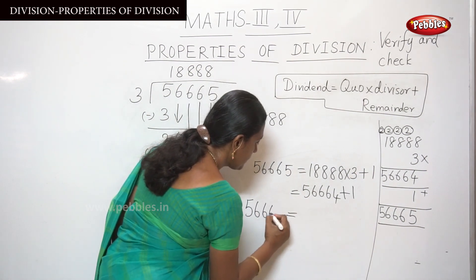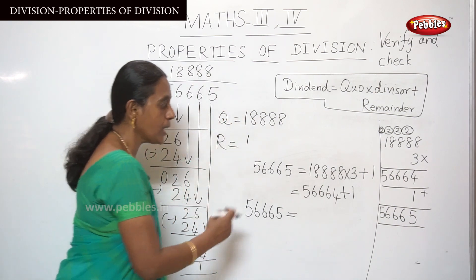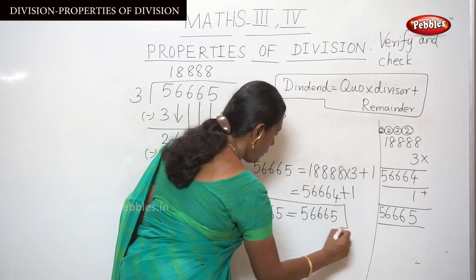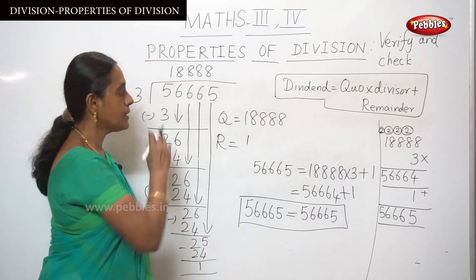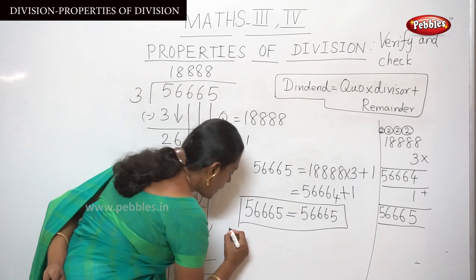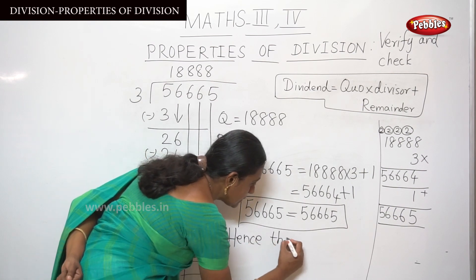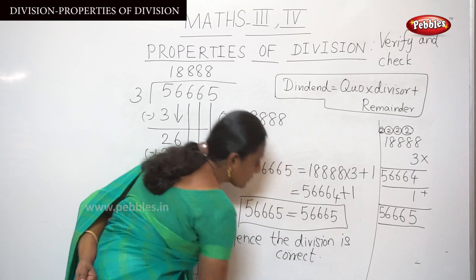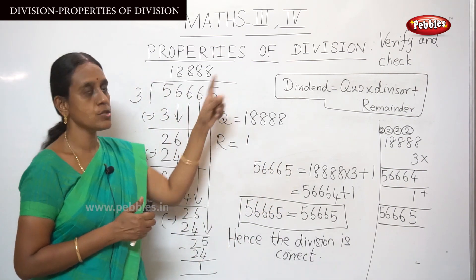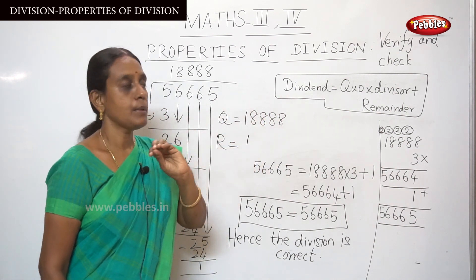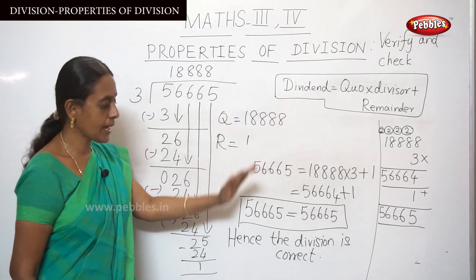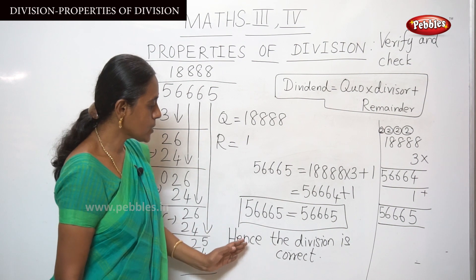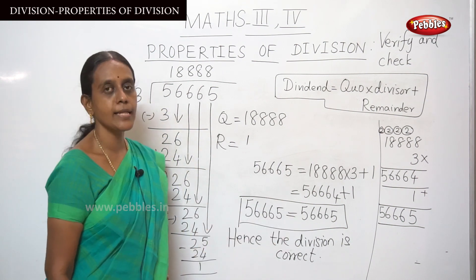Here 56,665 equals 56,665 — the left-hand side and right-hand side are the same. So hence the division is correct. You have to memorize this formula, apply the numbers, and check that both sides are equal. So this is the method to verify and check division. Hence the division is correct. Now let me move on to the next word problem in division.